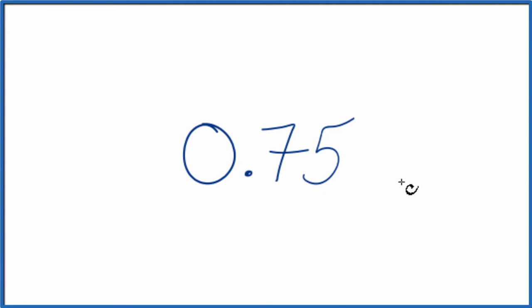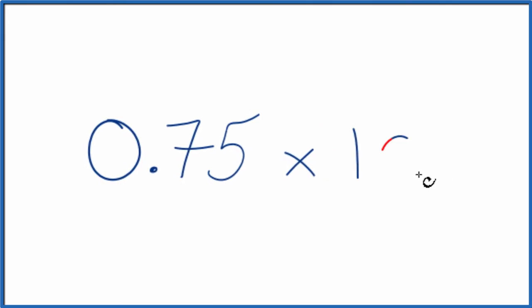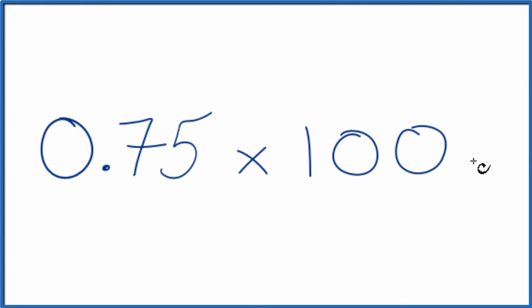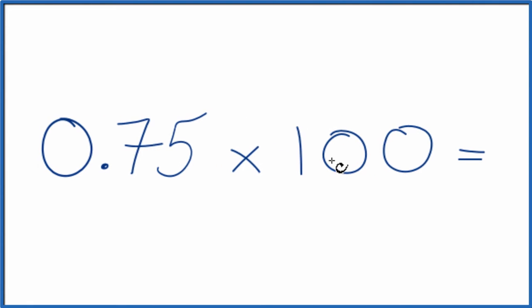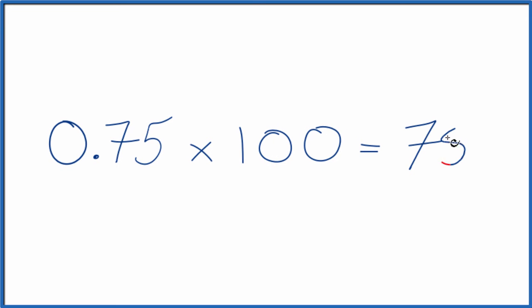First off, if you have a decimal, you can just multiply it by 100 and that'll give you a percent. So 0.75 times 100, that is 75 percent. It's a pretty easy way.